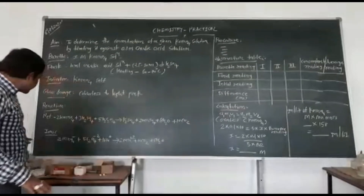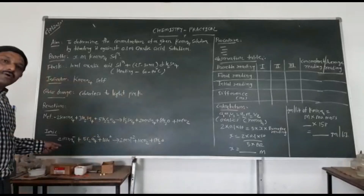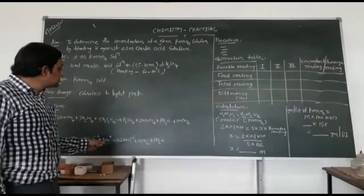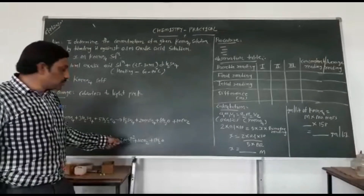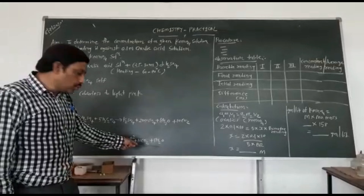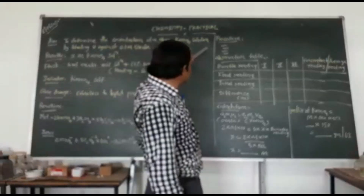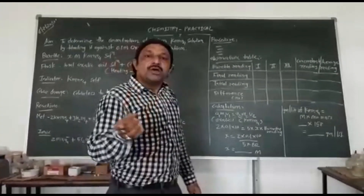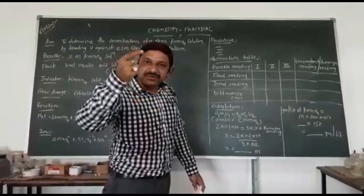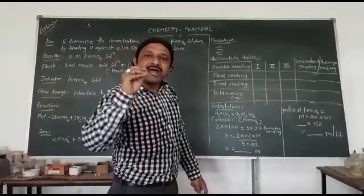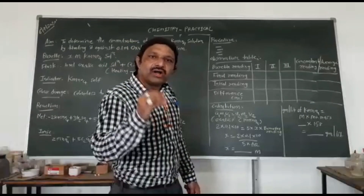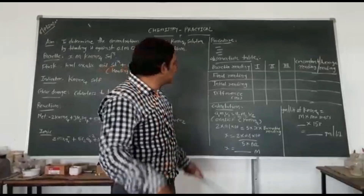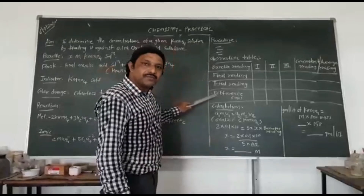The ionic reaction is: 2MnO4⁻ + 5C2O4²⁻ + 16H⁺ → 2Mn²⁺ + 10CO2 + 8H2O. Now the observation table for the second practical: the burette reading is between 8 and 9; you can write 8.6 or 8.7 — whatever reading you get. Our reading is 8.7.